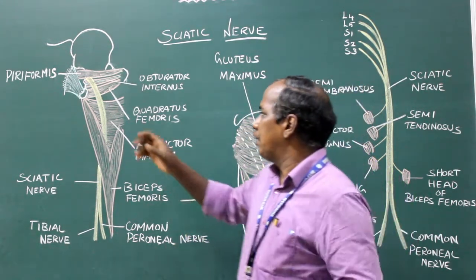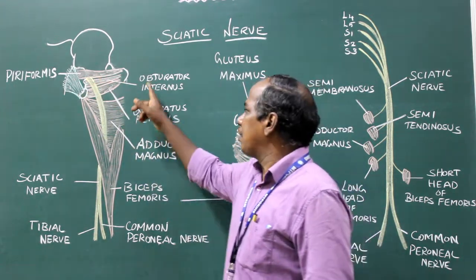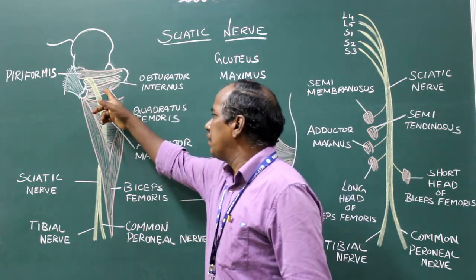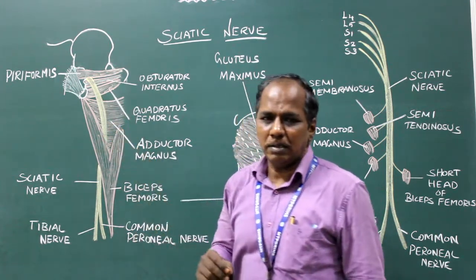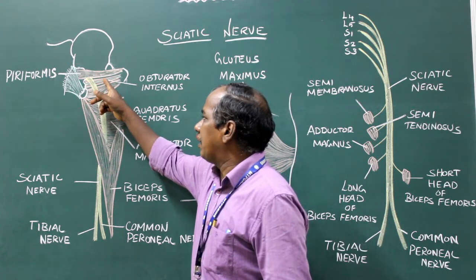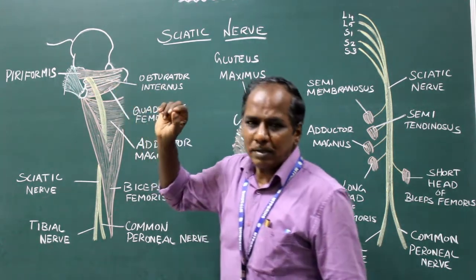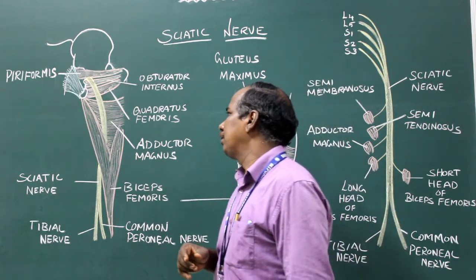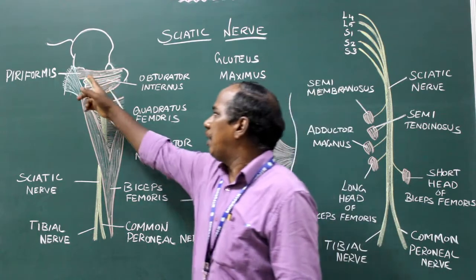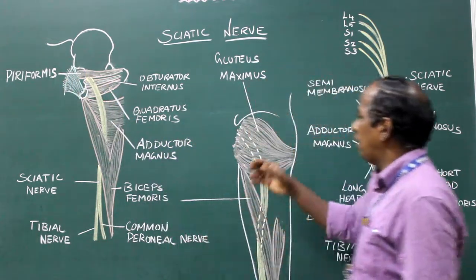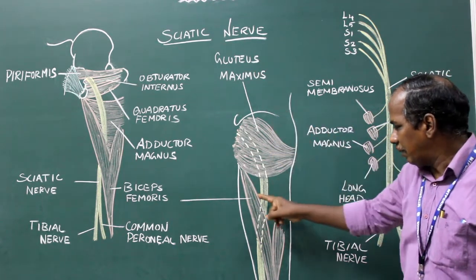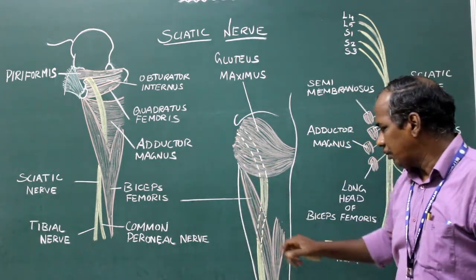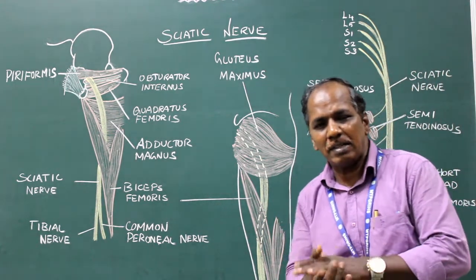Anteriorly, the sciatic nerve is related to: number one, the superior gemellus; number two, obturator internus; number three, inferior gemellus; number four, quadratus femoris; and number five, adductor magnus. Above the tendon of obturator internus the superior gemellus is present, and below it the inferior gemellus is present. Posterior relations include: piriformis, gluteus maximus, and the long head of biceps femoris.